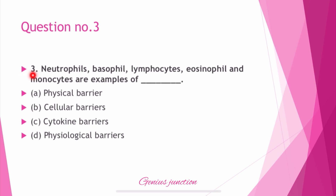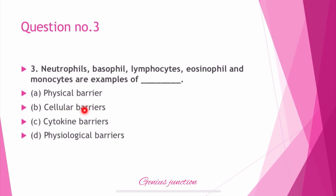Question number 3: Neutrophils, basophils, lymphocytes, eosinophils, and monocytes are examples of? Options are: physical barrier, cellular barrier, cytokine barrier, physiological barrier, or cytokine and cellular barriers. All these are cellular barriers.